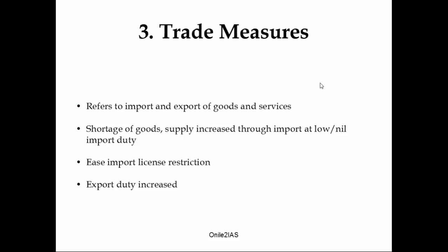The third measure is trade measures, which simply refers to the import and export of goods and services. When the supply chain is affected due to shortage of goods, supply is increased through imports from other countries at low or nil import duty. Import license restrictions are eased. Export duty is increased so that goods do not get exported and supply remains in the domestic market.